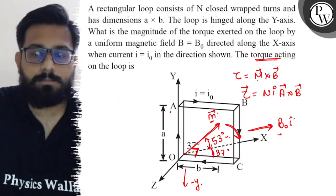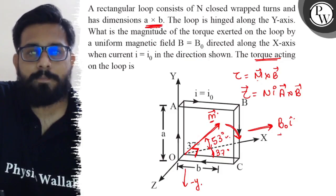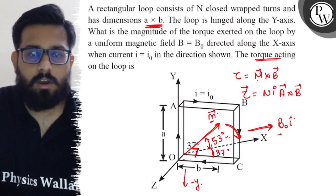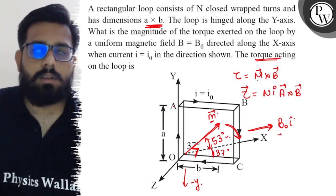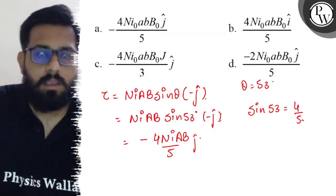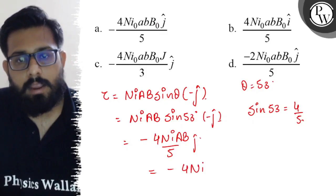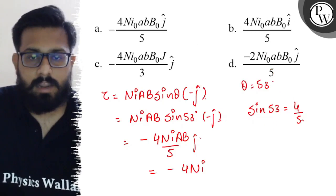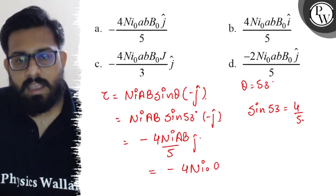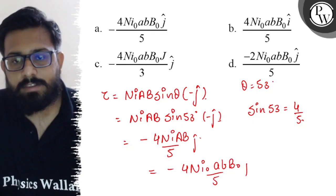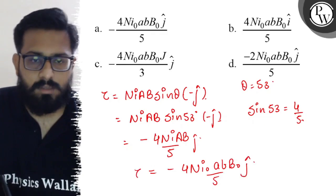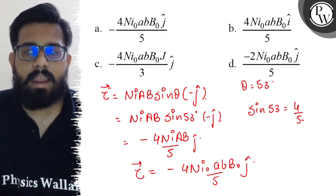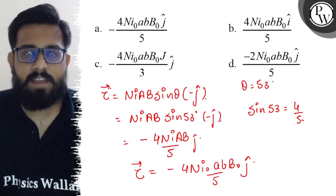Now for the area: the area is given as a cross b, meaning length times width equals a·b. Substituting the values — current is i0, magnetic field is B0 — the torque comes out to be minus 4n·i0·a·b·B0 upon 5 j-cap.